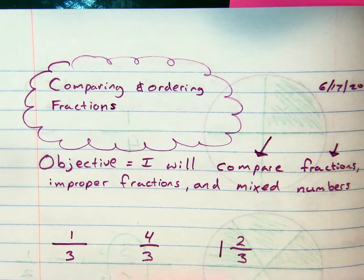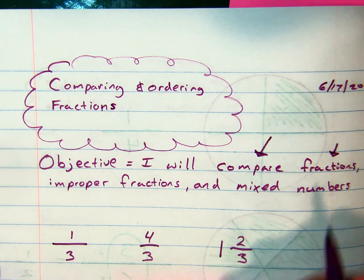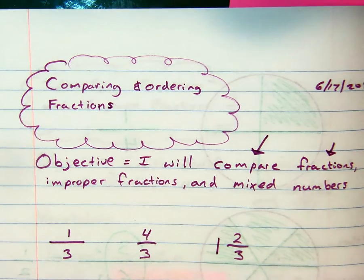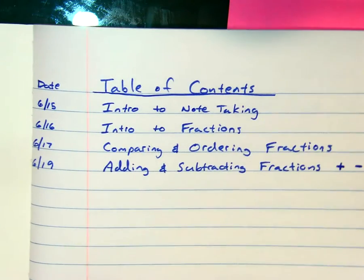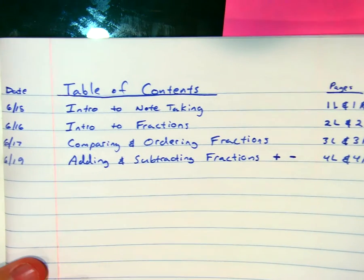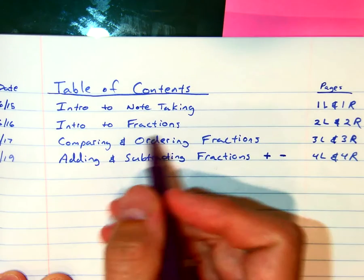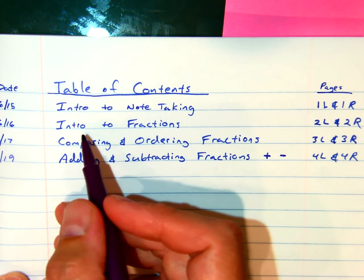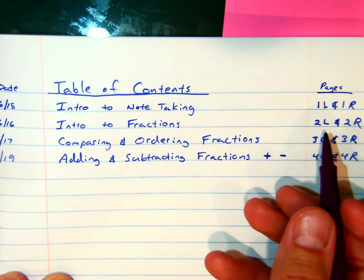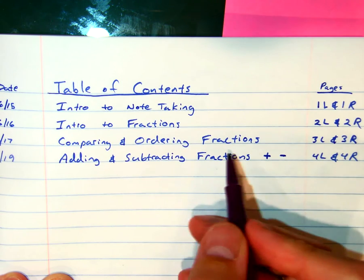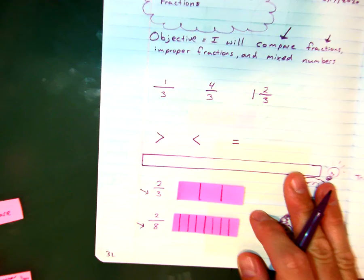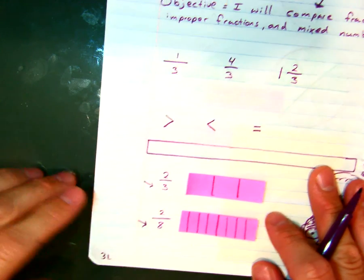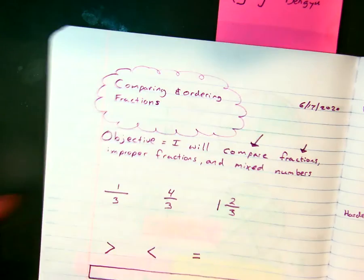Greetings mathematicians! Let's look at today's video notes. Our title is comparing and ordering fractions. For those of you with our video notebook, I'm going to flip back to my table of contents. On page 1L and 1R are note-taking pages. If you missed yesterday's intro to fractions, those are on 2L and 2R. Today we are on page 3L and 3R.